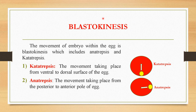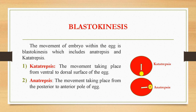Blastokinesis refers to the movement of the embryo within the egg. It includes katatropsis and anatropsis. Katatropsis is the movement taking place from the ventral surface of the egg to the dorsal surface. You can see that the yellow portion, which represents the embryo, moves from the ventral surface to the dorsal surface. Anatropsis is the movement taking place from the posterior to the anterior pole of the egg.